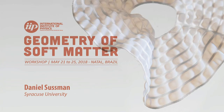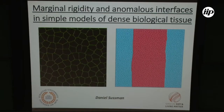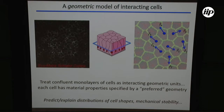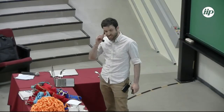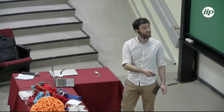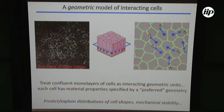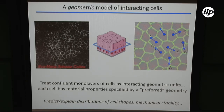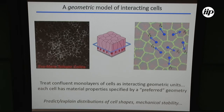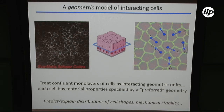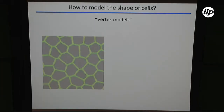We're in the regime of disordered cellular systems, and I have to thank the previous speaker for doing so much of my work for me. We're going to be interested in trying to understand the properties of these dense, confluent monolayers of epithelial tissue. We're not the first people to look at videos like this and imagine trying to coarse-grain the system into treating cells as interacting geometrical units, and we heard a bit about how these models treat the shapes of cells.